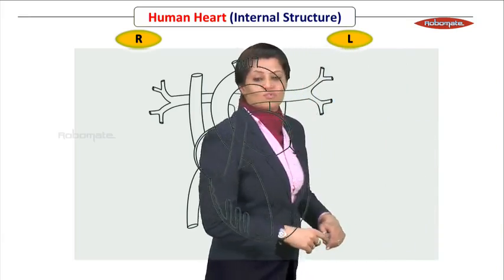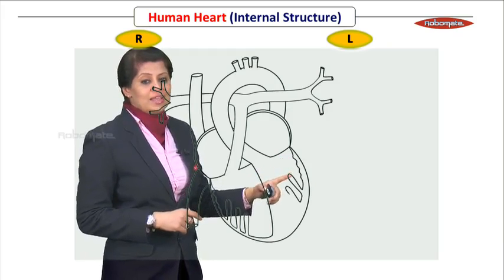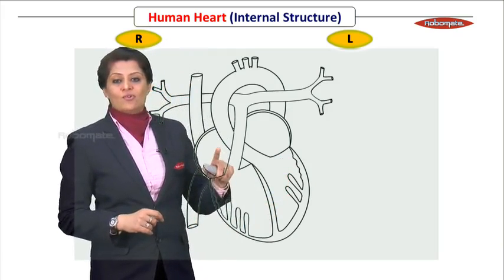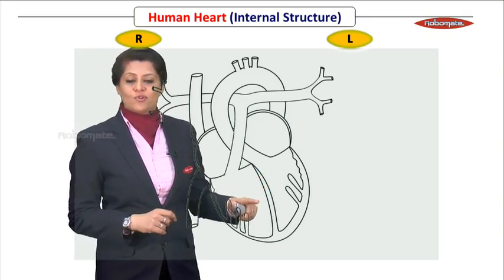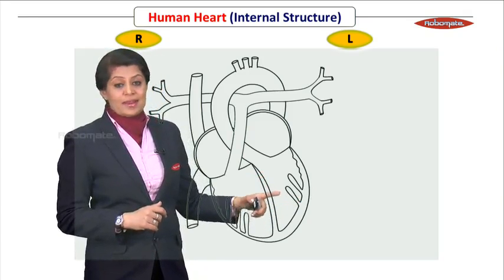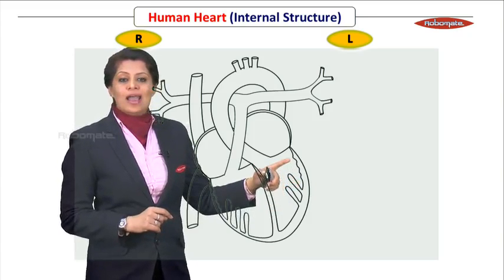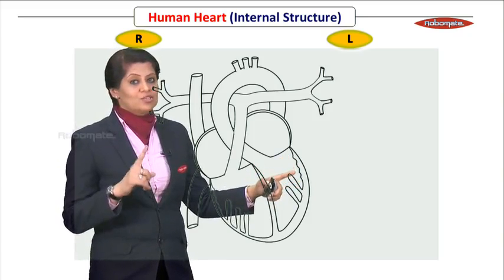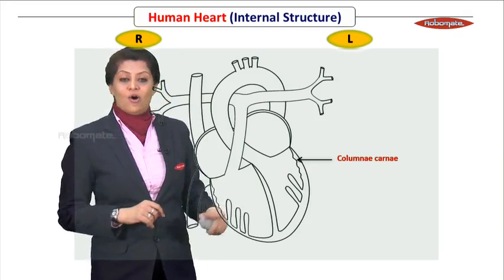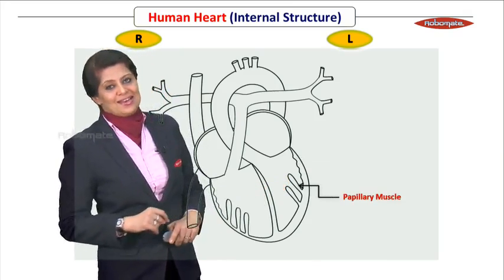Now for the left ventricle, observe its wall — it is uneven, having two papillary muscles. Note that when drawing the four walls of these four chambers, the thickest wall you'll be making is that of the left ventricle. Don't make a smooth line here — make an uneven line because there are muscular ridges called columnar carnea present. The muscles below are the papillary muscles.